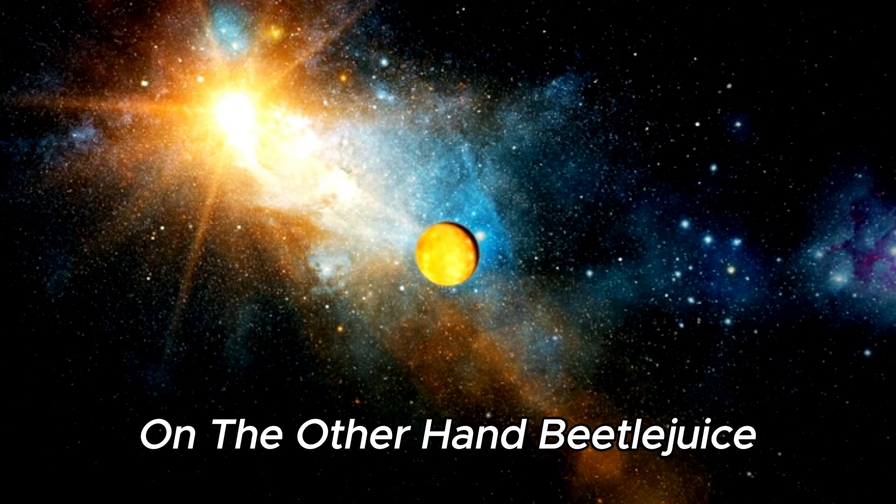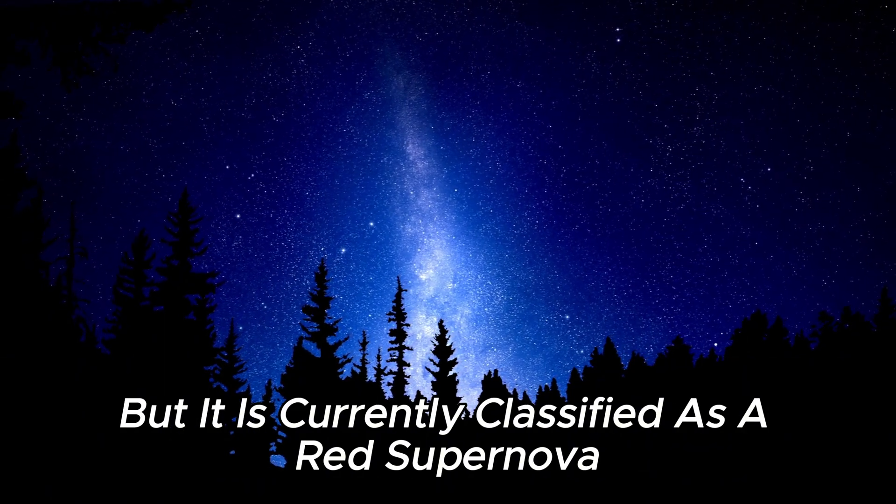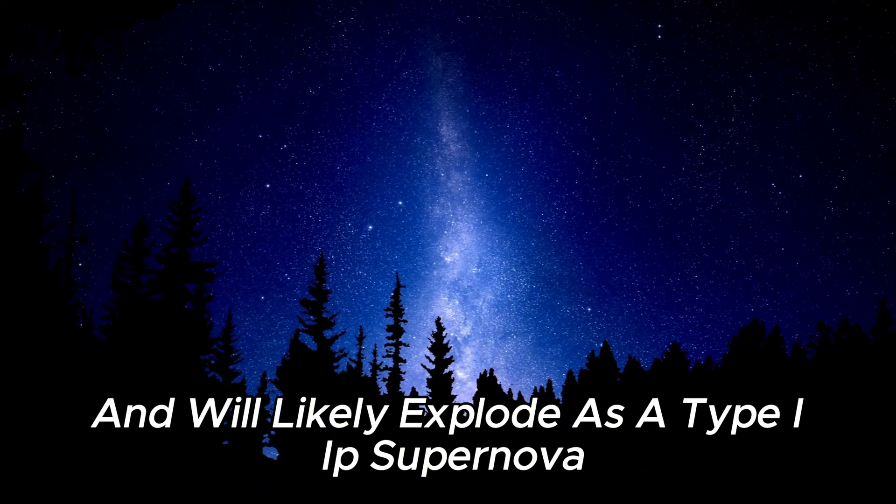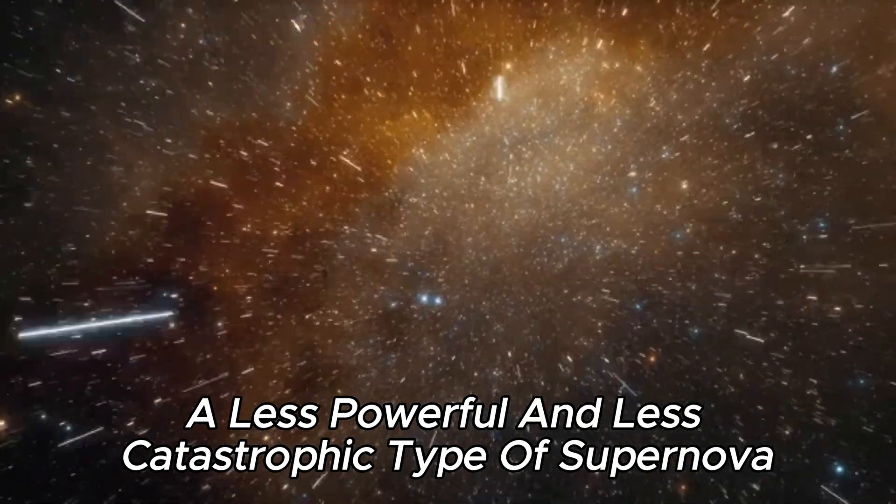On the other hand, Betelgeuse was expected to eventually become a type 2 supernova, but it is currently classified as a red supergiant and will likely explode as a type IIp supernova, a less powerful and less catastrophic type of supernova.